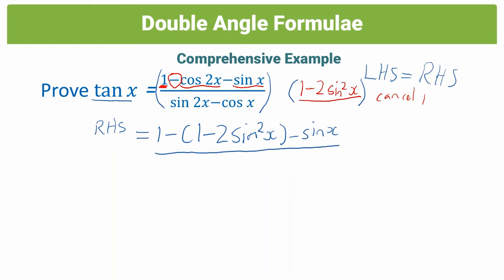Now let's take a look at our denominator. In the denominator we have the sin double angle and a cos single. One of the uses we spoke about with the sin double angle was that if you see a cos single with it, you'll apply the sin double angle formula and take out cos as a common factor. So we'll apply the sin double angle in the denominator, and that becomes 2 sin x cos x minus cos x.